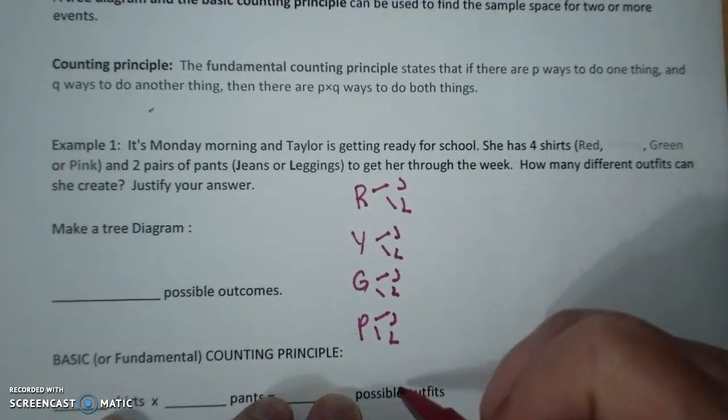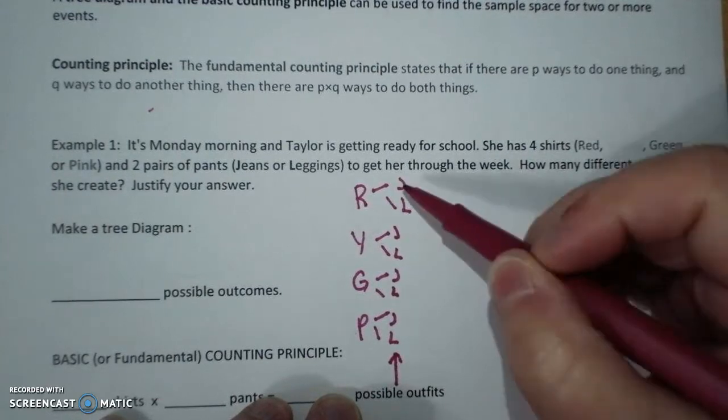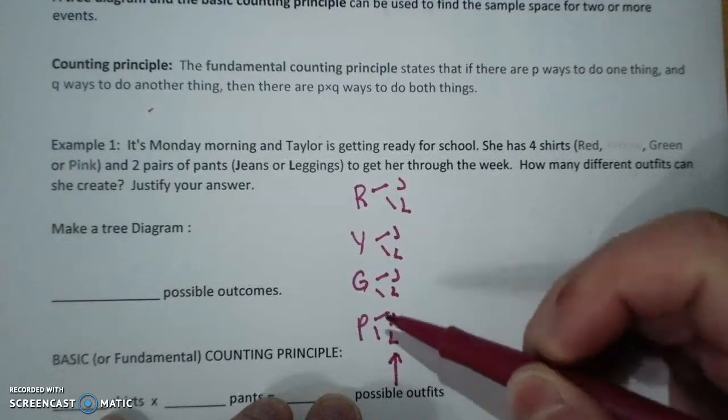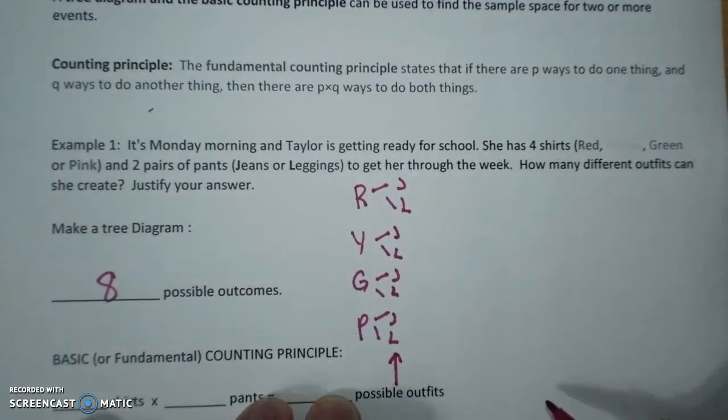And then what I'm going to do is I'm going to count down this last branch. One, two, three, four, five, six, seven, eight. And there are eight possible outcomes.